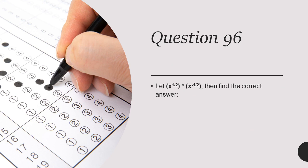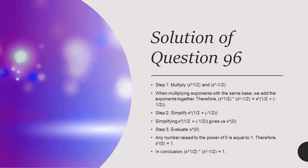Question 96: Let x power 1 over 2 multiplied by x power inverse 1 over 2. Then find the correct answer, which is 1. Pause the video to see that when you simplify this expression, the answer is 1.